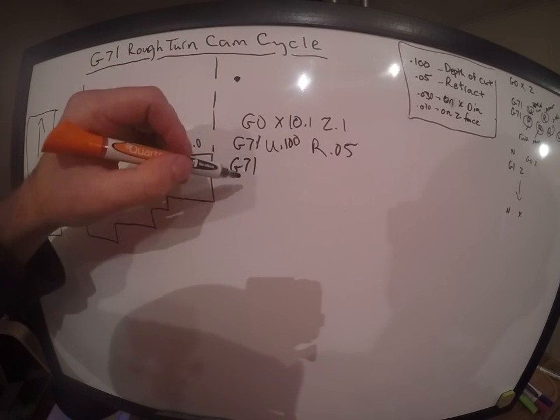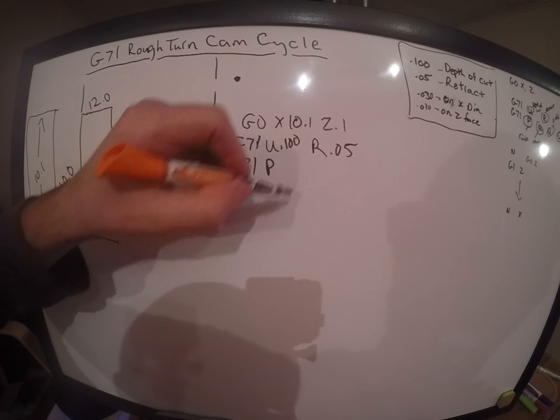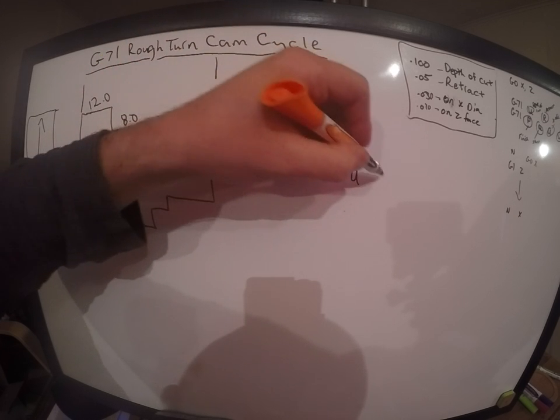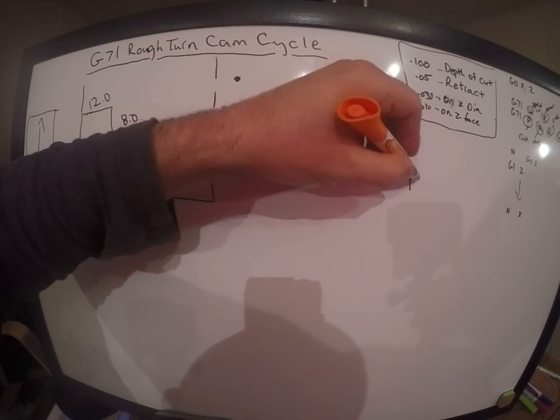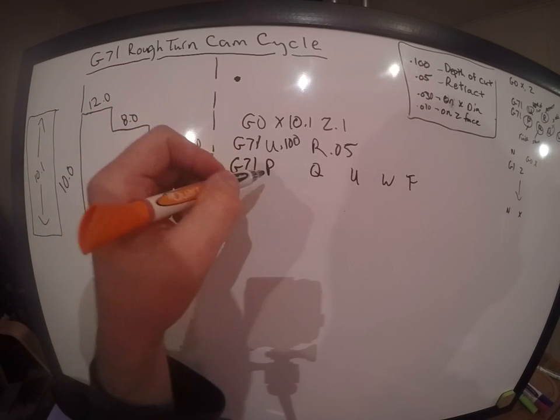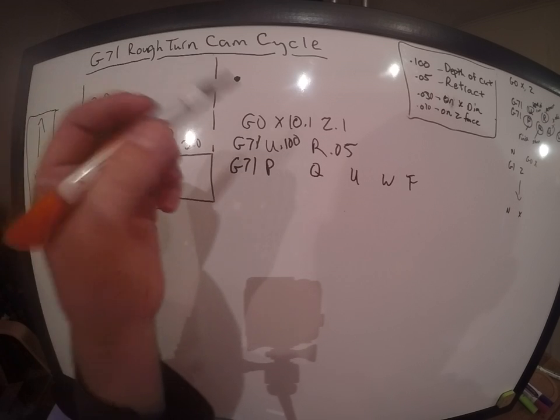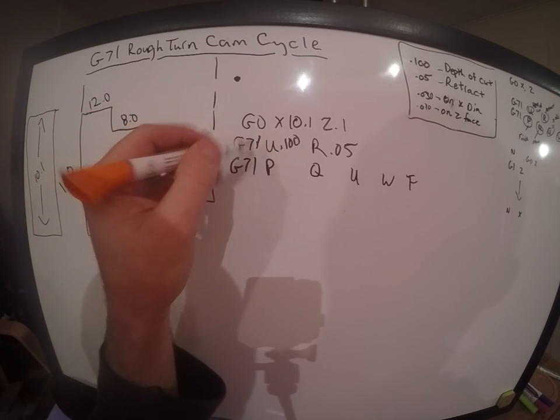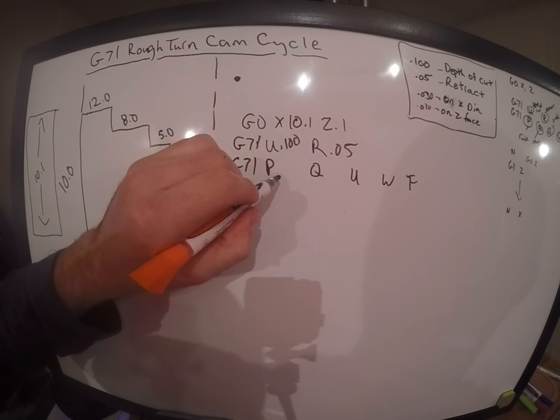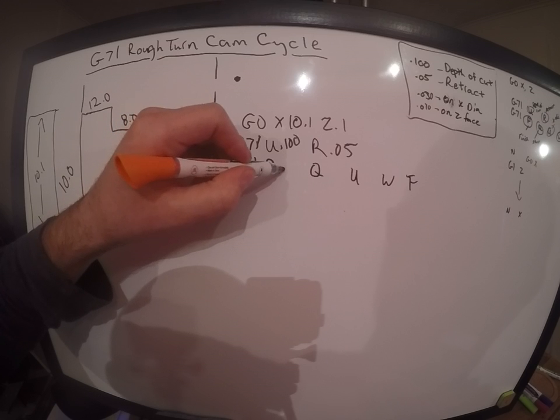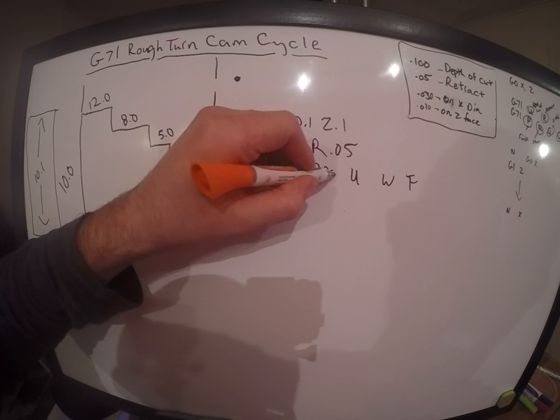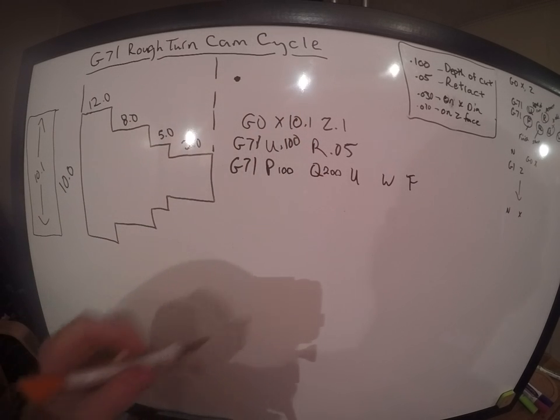G71 on the next block. We're going to plug in P, Q, U, W, and F. Let's not get confused here. It's very simple if you let it be. P and Q are just the beginning and ending of this cam cycle. What you put in here is irrelevant really, as long as they don't match. So as long as we put two different numbers, we're going to be right. So we're going to put P 100 and Q 200. Done, no problems.